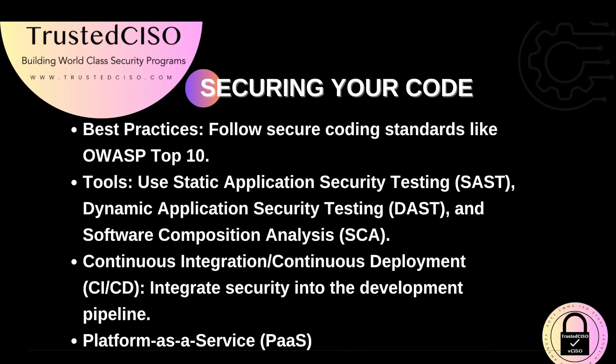Securing your code is an essential part of vulnerability management. Follow secure coding standards like the OWASP Top 10 and secure by default to minimize vulnerabilities in your code. Use tools such as static application security testing (SAST), dynamic application security testing (DAST), and software composition analysis (SCA) to identify and fix vulnerabilities during development. Integrate security into your CI/CD pipeline to ensure ongoing security throughout the software development lifecycle.